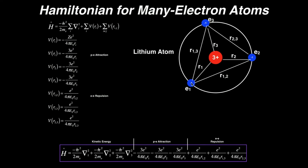For the first electron, separated from the nucleus by distance r1, the potential energy of attraction would be negative 3e squared over 4 pi epsilon zero r1. For electron 2, separated by r2, it would be negative 3e squared divided by 4 pi epsilon zero r2. For the third electron, separated by r3, it would be negative 3e squared divided by 4 pi epsilon zero r3. That takes care of the three attraction terms, one for each electron.